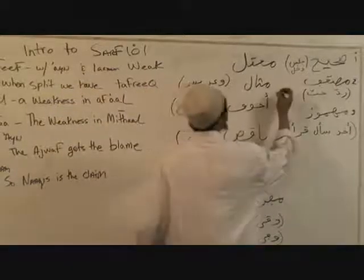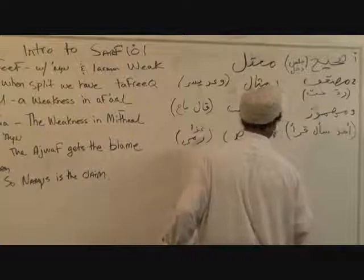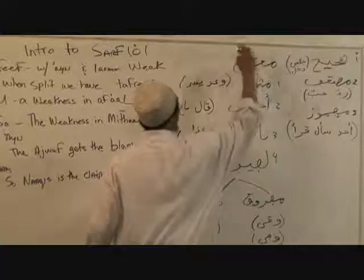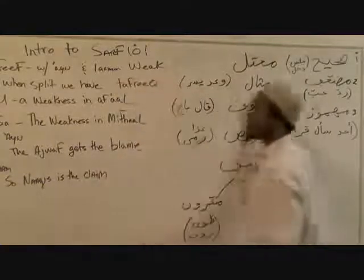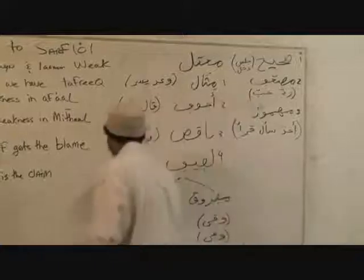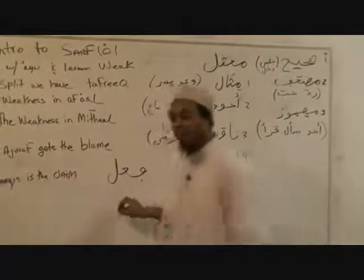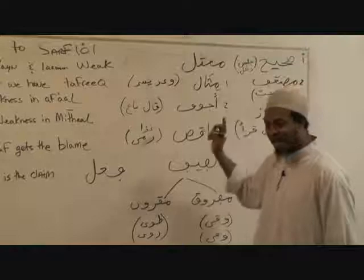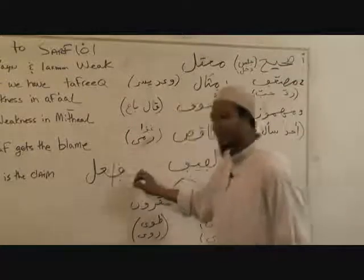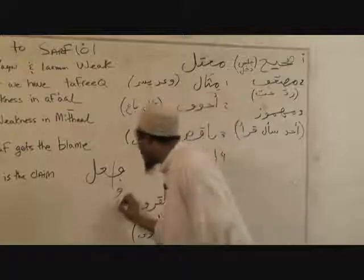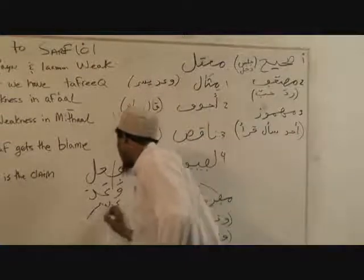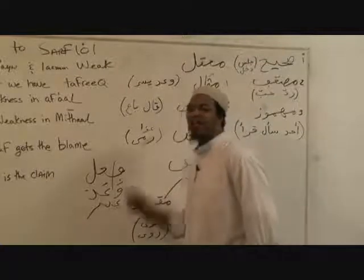When we talk about mu'tal, we could mention any one of these. If we start with the first one, it's called mythal. A mythal is any verb — the verb starts off on the fa'al, the a'in, and the lam. A fi'lun is considered mu'tal mythal, or weak, if the fa'al of the word has a wa or a ya. For example, wa'ada or yasara — these two are called fa'alul mu'tal mythal.